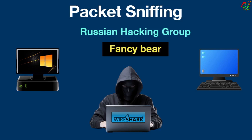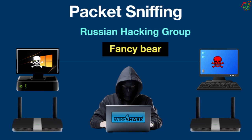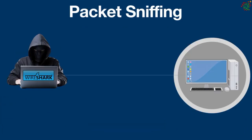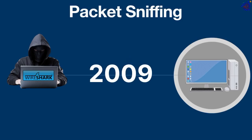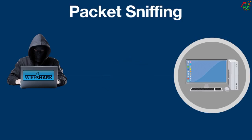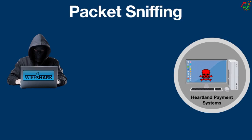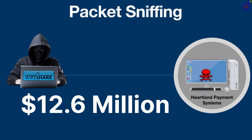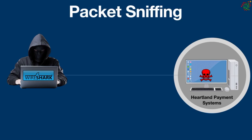Fancy Bear also used malware and EternalBlue, which exploited vulnerabilities in Windows. More recently, in 2021, Fancy Bear was found to spread malware through unpatched vulnerabilities in Cisco routers. Another sniffing attack occurred in 2009, when the American payment processing company Heartland Payment Systems experienced a security breach, allowing sniffers to access credit card holder data. The company was fined $12.6 million for failing to protect customer data.